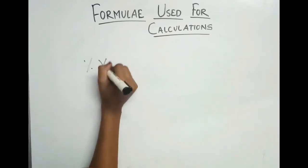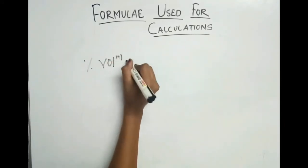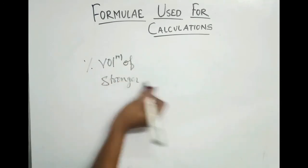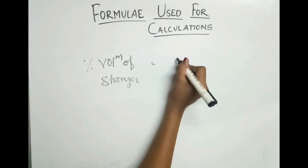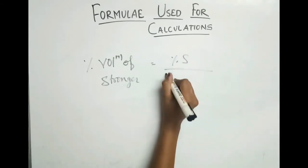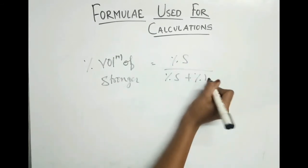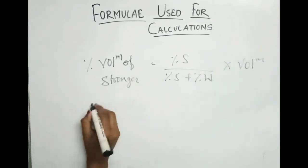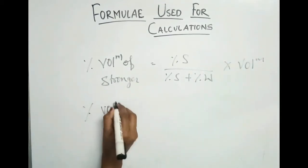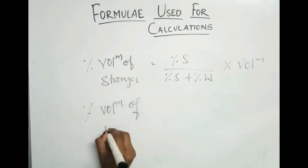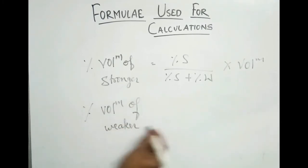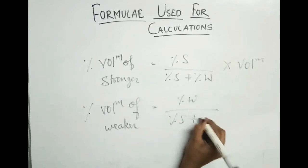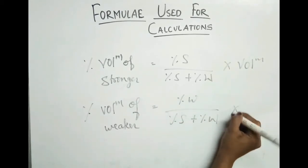Percent volume of stronger equals percent of stronger upon percent of stronger plus percent of weaker, times volume. Percent volume of weaker equals percent of weaker upon percent of stronger plus percent of weaker, times volume.